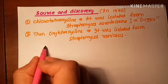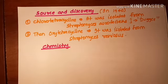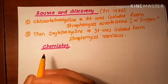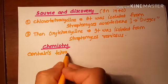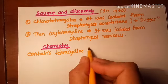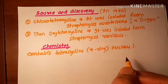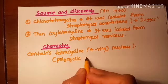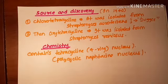Regarding the chemistry of tetracycline: it contains a tetracycline nucleus, meaning a four-ring nucleus. This can also be named the polycyclic naphthacene nucleus.